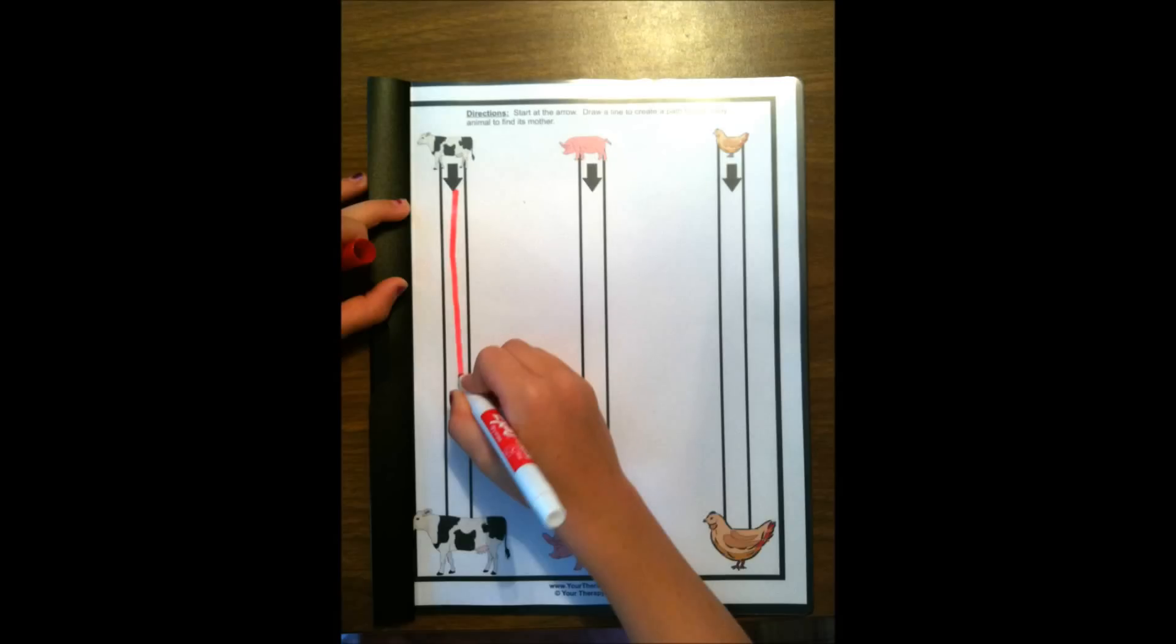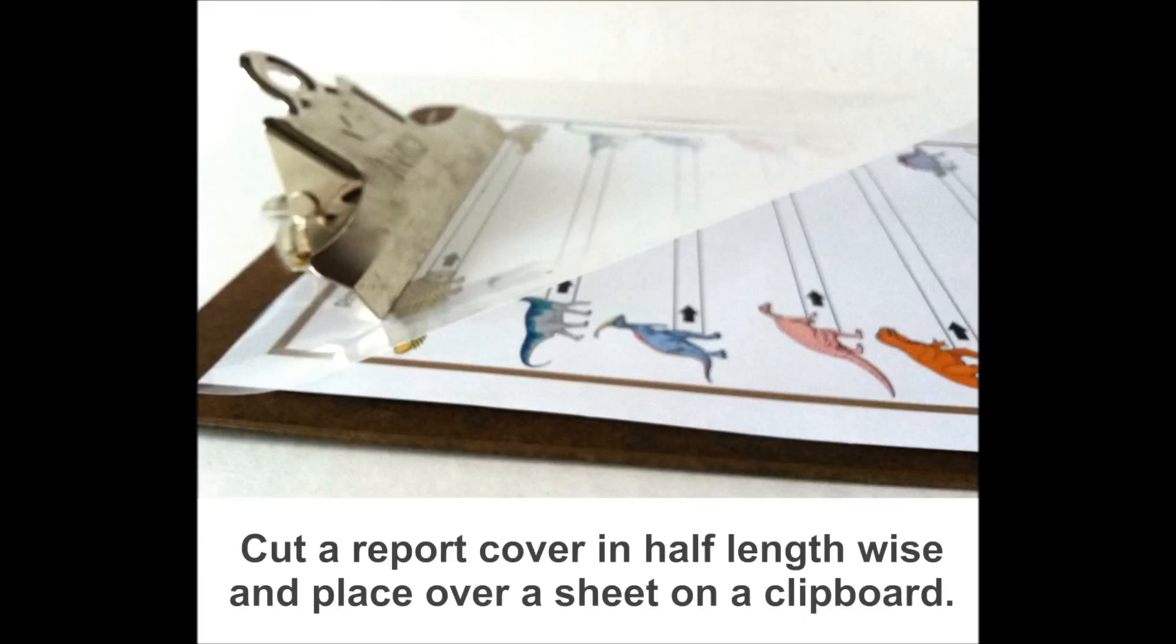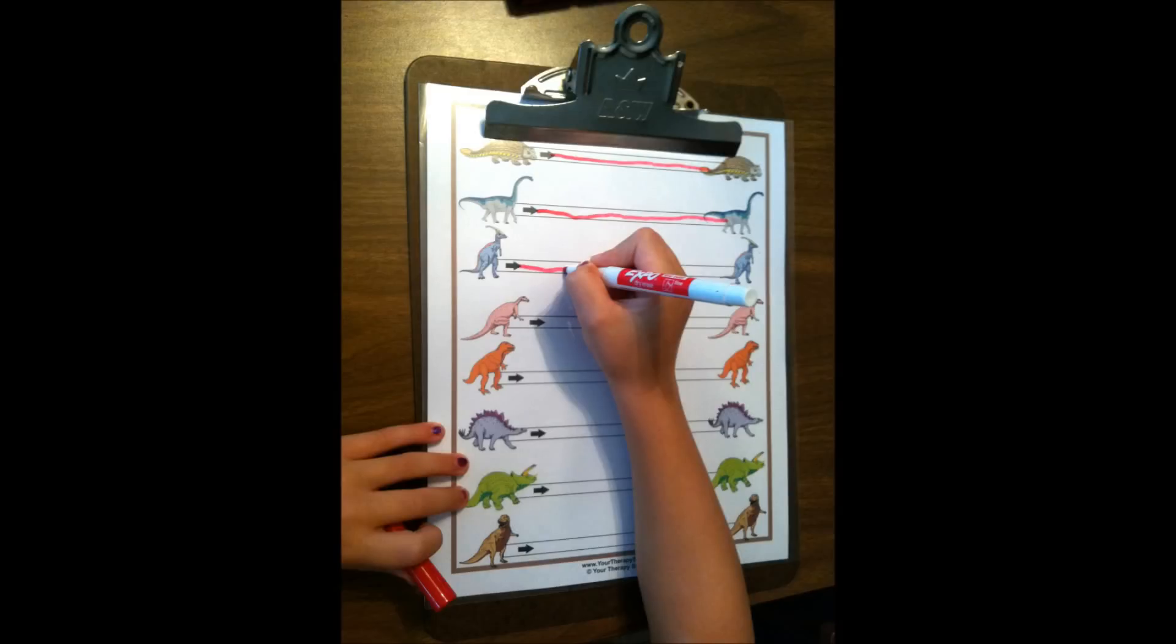Another option is to put a clear report cover on top of the piece of paper on a clipboard, and you can easily change the paper by just unclipping it and slipping in a new one.